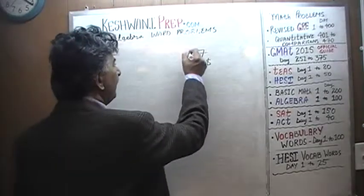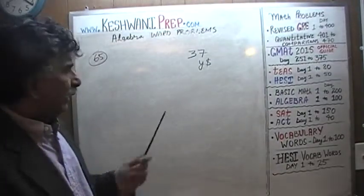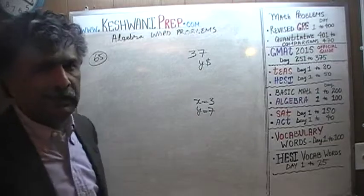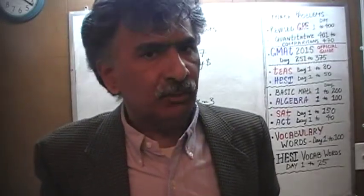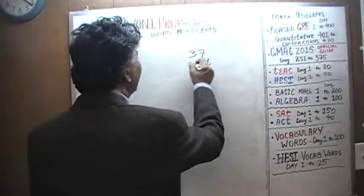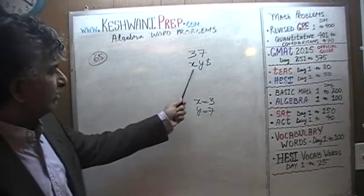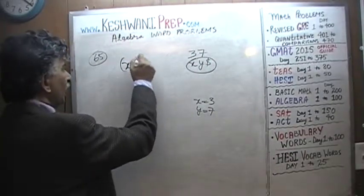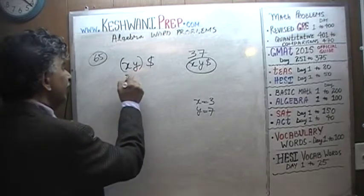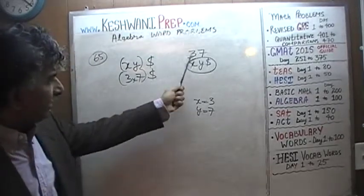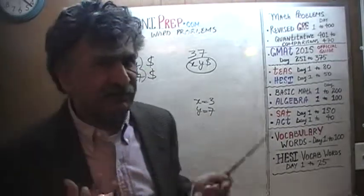But what happens if it happens to be 37? So if I tell you that X is equal to 3 and Y is equal to 7, how do I express a notion of 37 in the language of algebra? We cannot write this as XY dollars, because in the language of algebra, XY means 3 times 7 dollars — and that's not what you meant to say. You did not mean to say 21 dollars; you meant to say 37 dollars. How do I express that concept using algebraic notation?